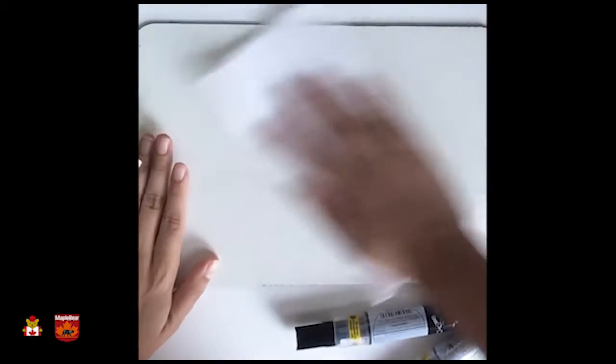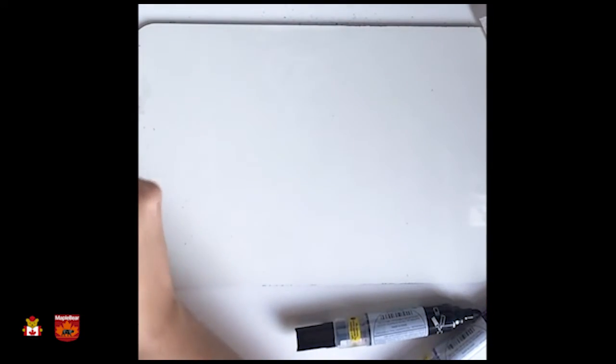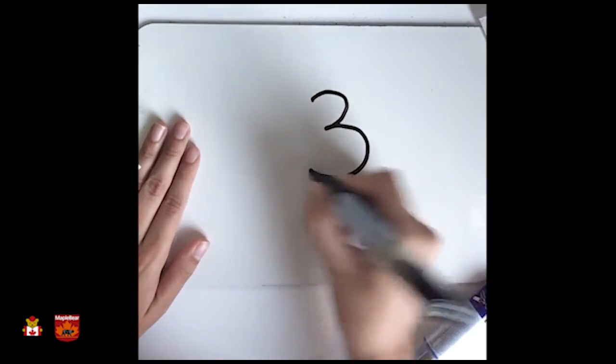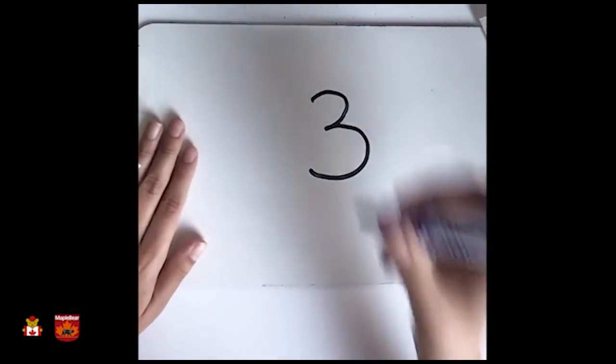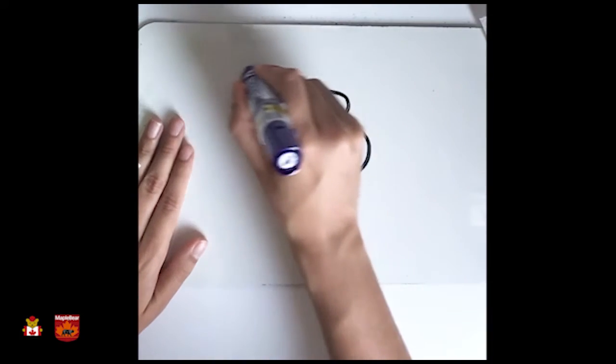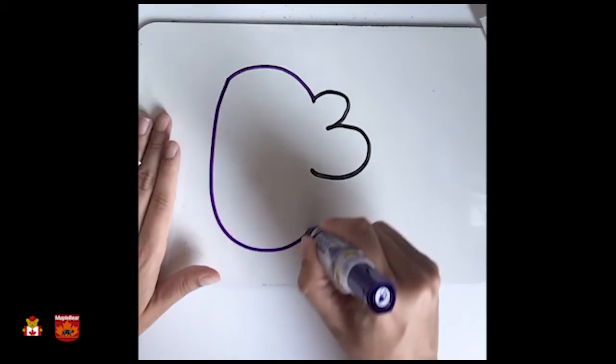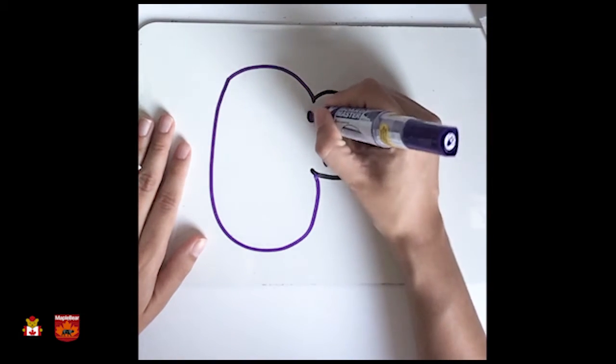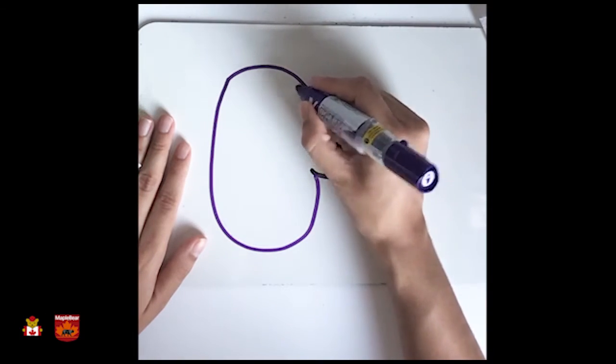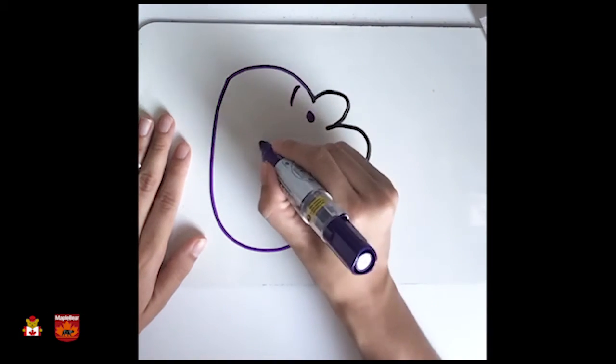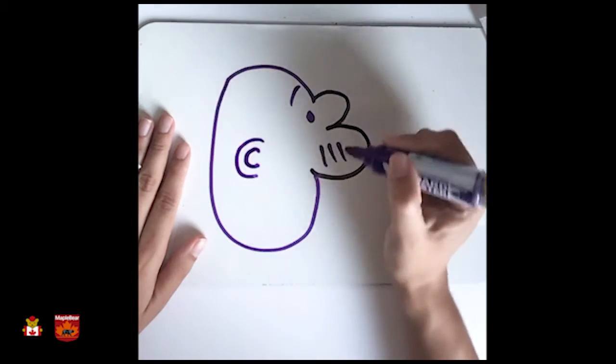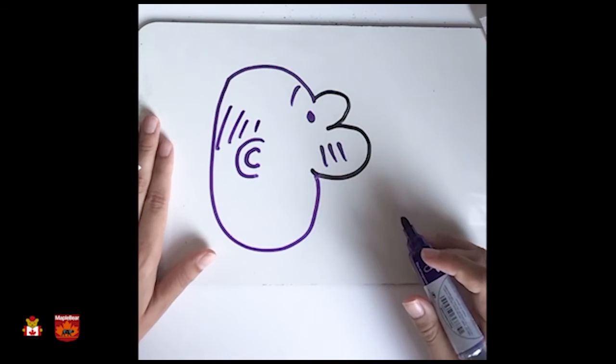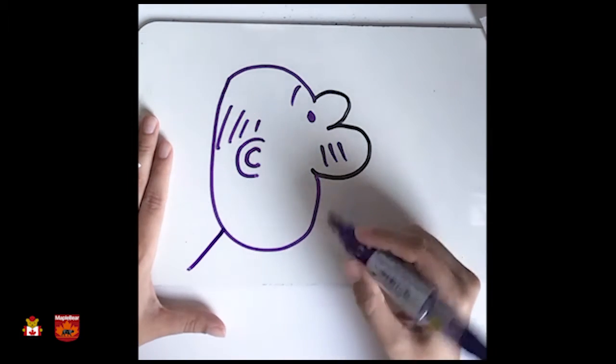Now, next number. Number three. Okay, let's go. This is my favorite. Let's see if you know what is this. Done. It's a face. Then maybe you can do like this.